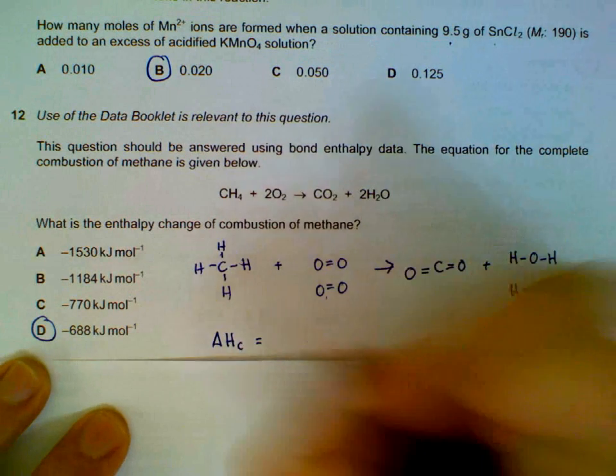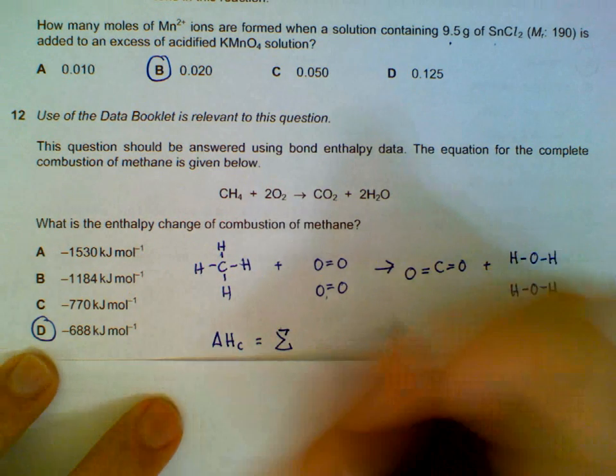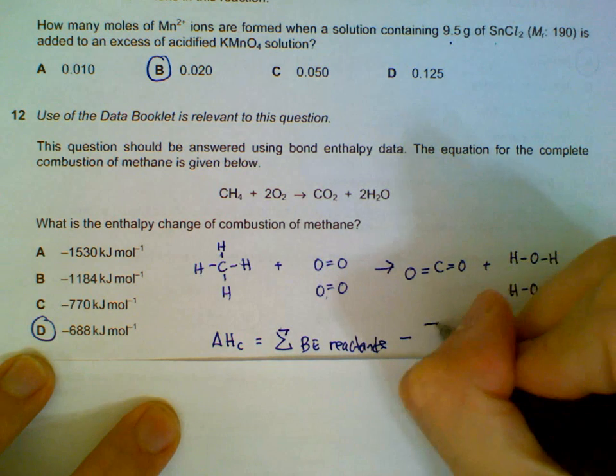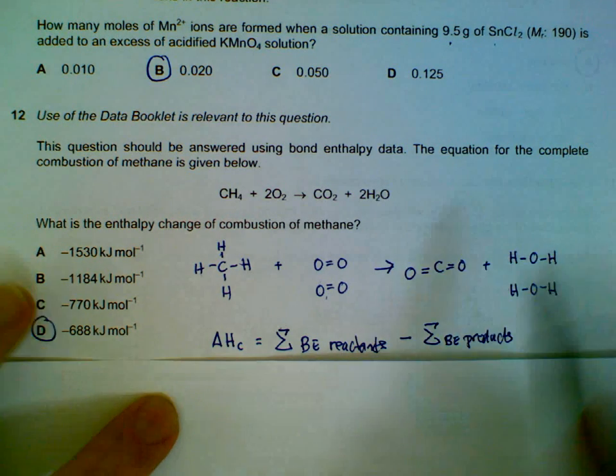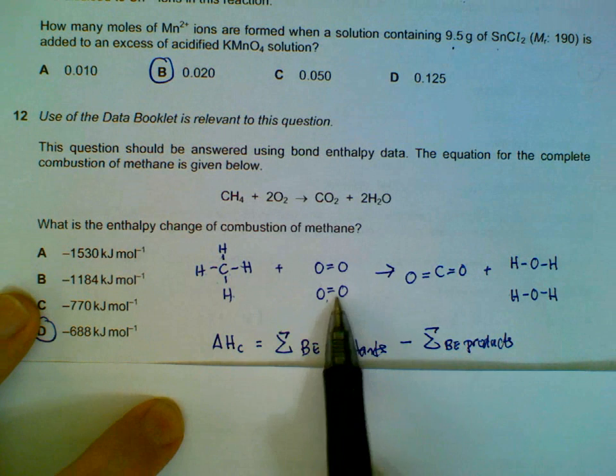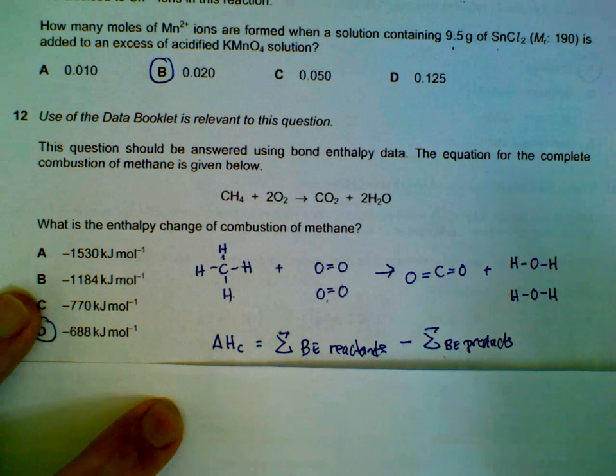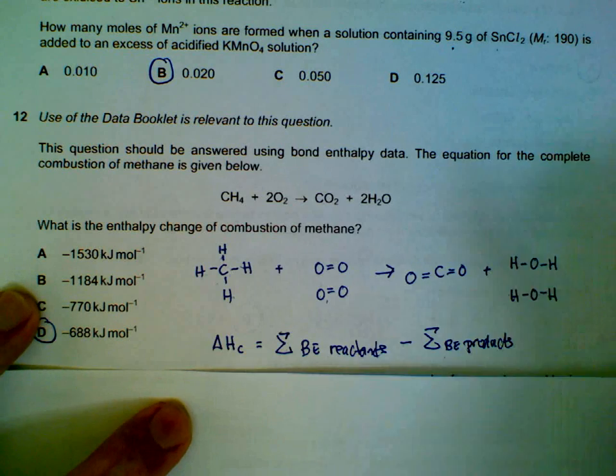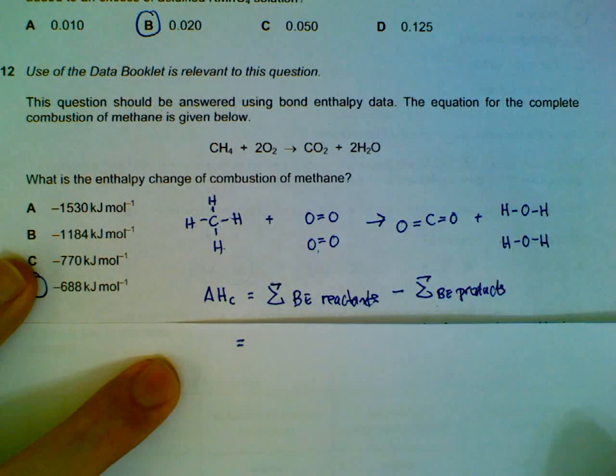And then we can now refer to the data booklet. For combustion, we have sum of the bond energy of the reactants minus sum of the bond energy of the products. Because we actually have to break the bonds of the reactants first, that would take in energy. And then when we form the products, the energy is given back up as an exothermic reaction. So bond energy of reactants minus bond energy of products will give us the enthalpy change of this reaction.